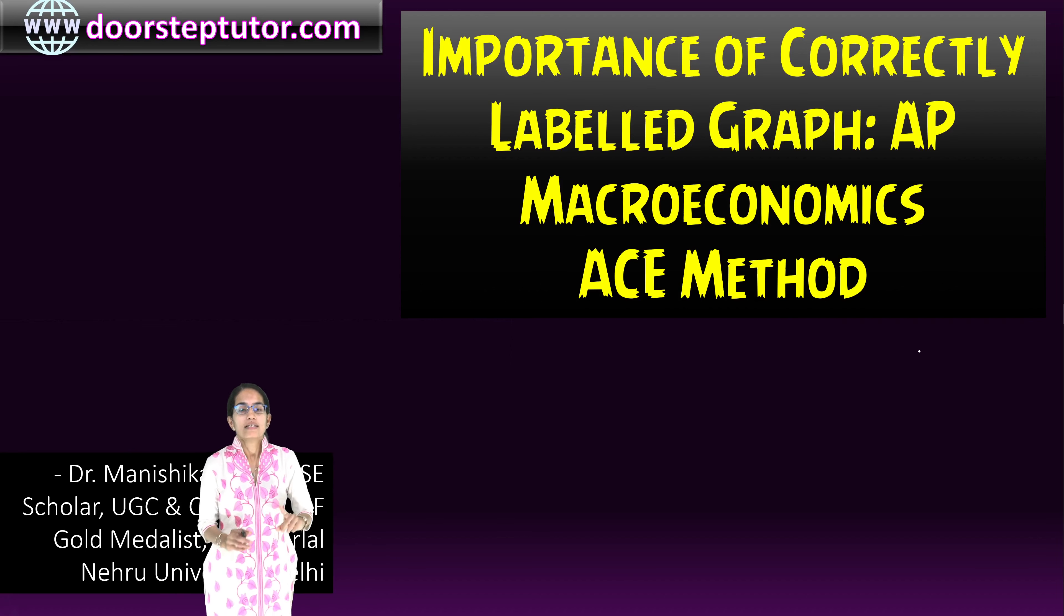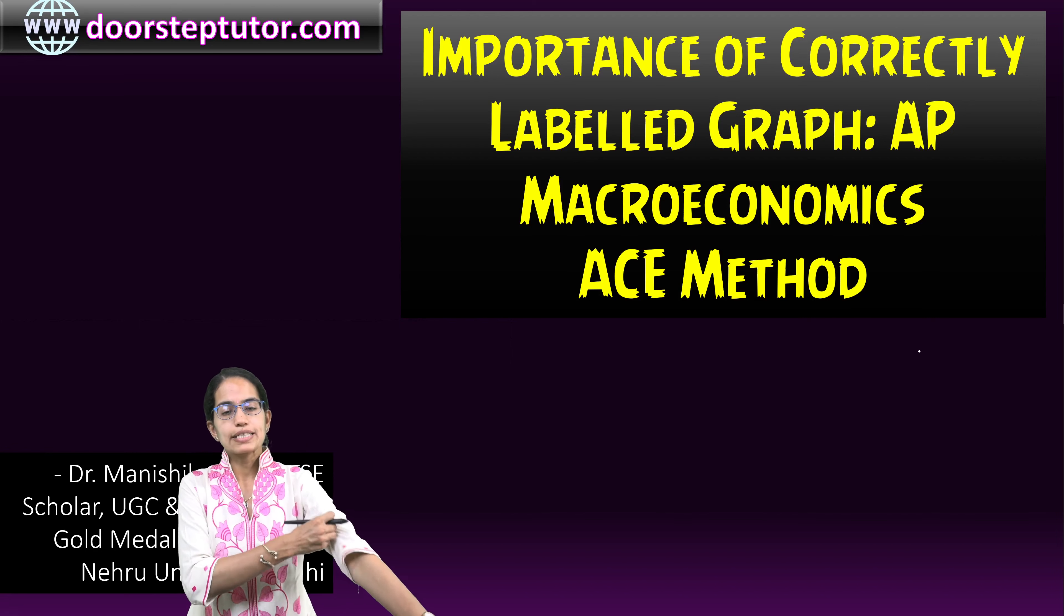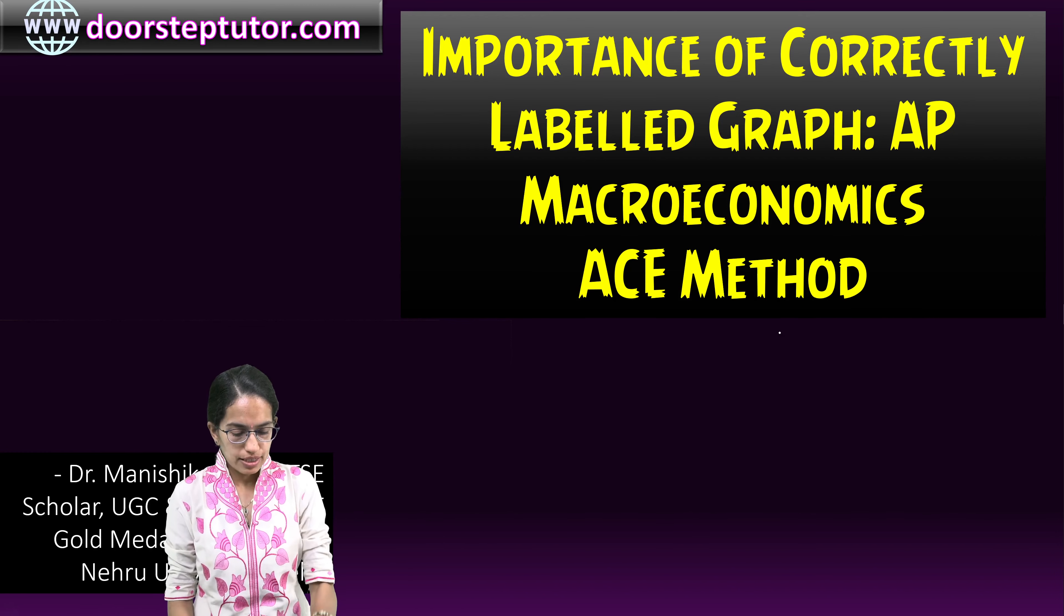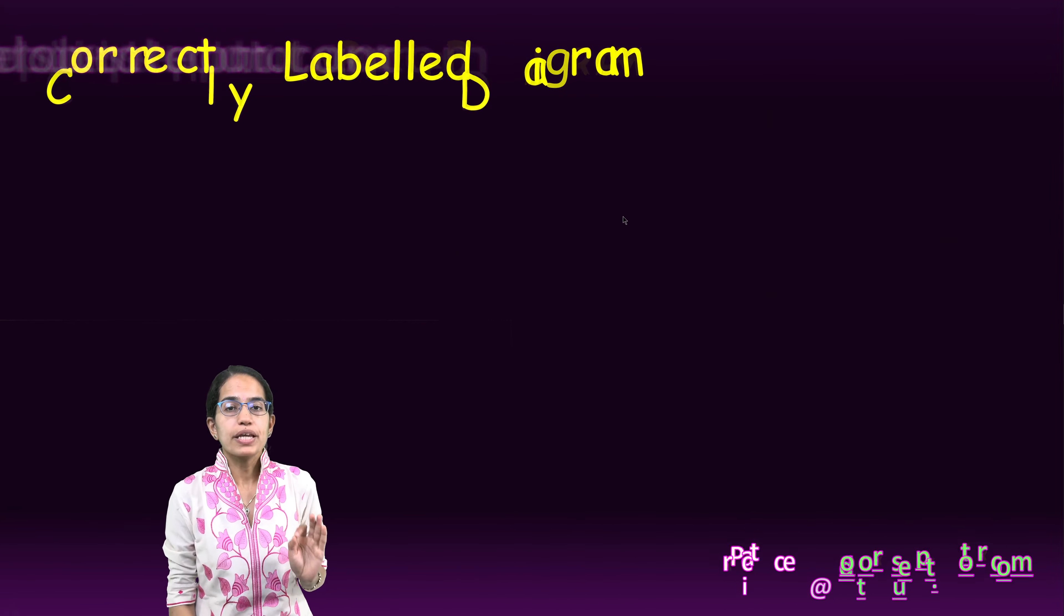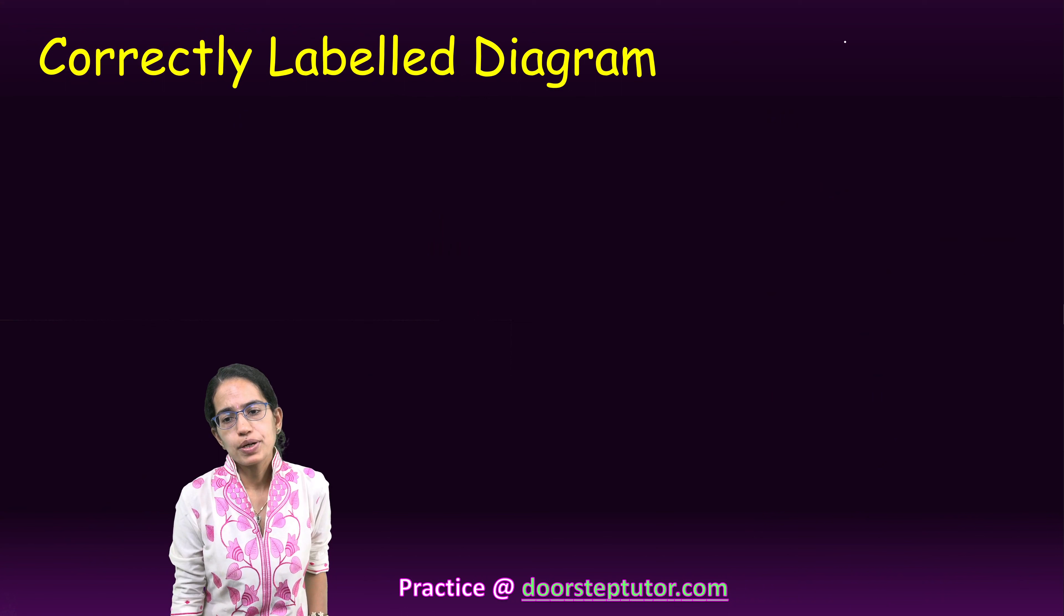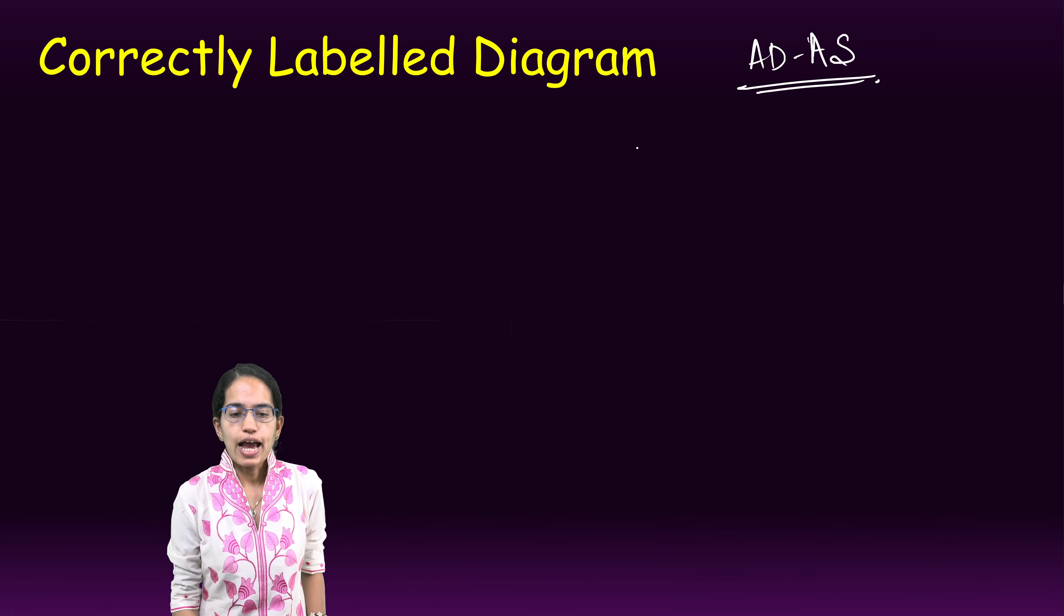Welcome. Let's understand graph questions in your AP macroeconomics and microeconomics and why correctly labeled graphs are important. The three basic fundamental things based on which you score for a correctly labeled graph: for example, you are asked to have a graph of aggregate demand and aggregate supply model.